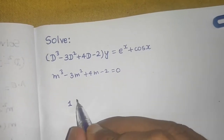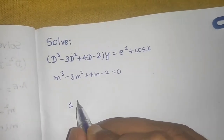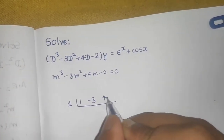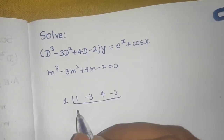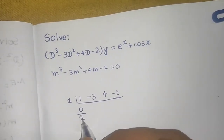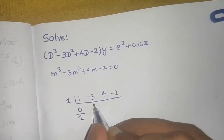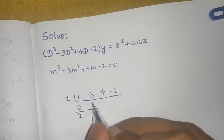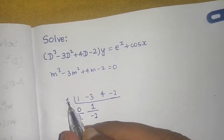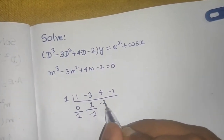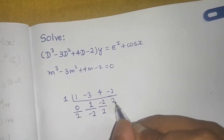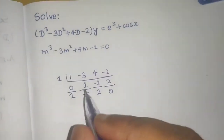Write the coefficients: 1, −3, 4, −2. Using synthetic division with root 1: bring down 1, multiply to get 1, add to get −2, multiply to get −2, add to get 2, multiply to get 2, add to get 0.